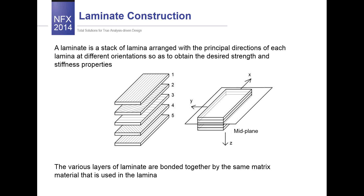A laminate is a stack of lamina arranged with the principal directions of each lamina at different orientations, so as to obtain the desired strength and stiffness properties. Each ply has a different direction, material, and thickness. Composite properties are calculated in the material coordinate system, and the zeta axis of the material is the same as the zeta axis for the global structure. Positive angles are defined by the right-hand rule, which we need to define the laminate orientation for the composite.